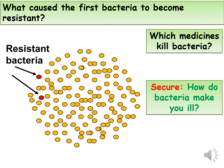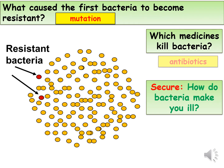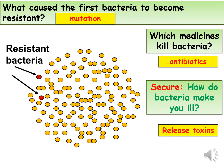As bacteria are dividing during binary fission, some of the bacteria mutate so that they become resistant to antibiotics. Normally, antibiotics treat bacteria. Bacteria make us ill by releasing toxins and the antibiotics neutralise the effects of those toxins.